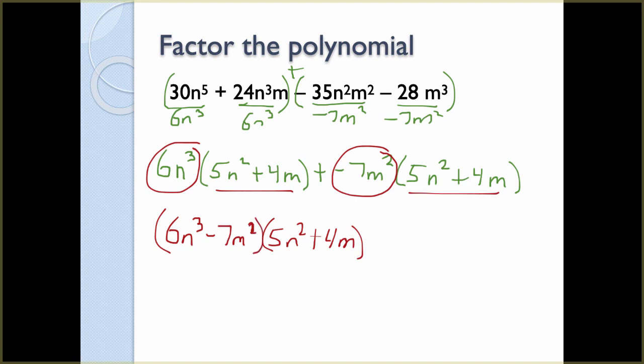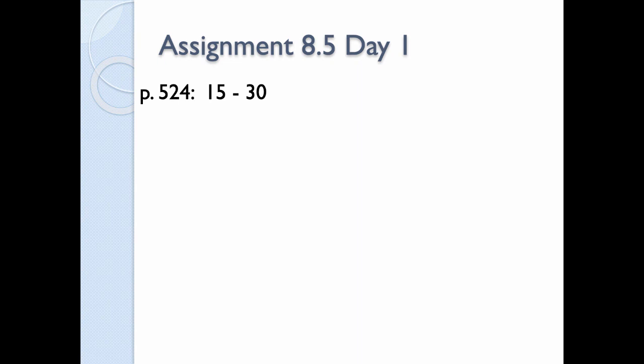You don't have to show the division step explicitly if you can see what's going on — you don't need to write it out. But if it helps keep things organized, that's your choice. That is it for section 8.5, day one. Make sure when you do these you're showing your work and how you're pulling the GCFs out. Show that you have the common groupings so you can pull that as a factor group. Thank you for watching and have a great day.